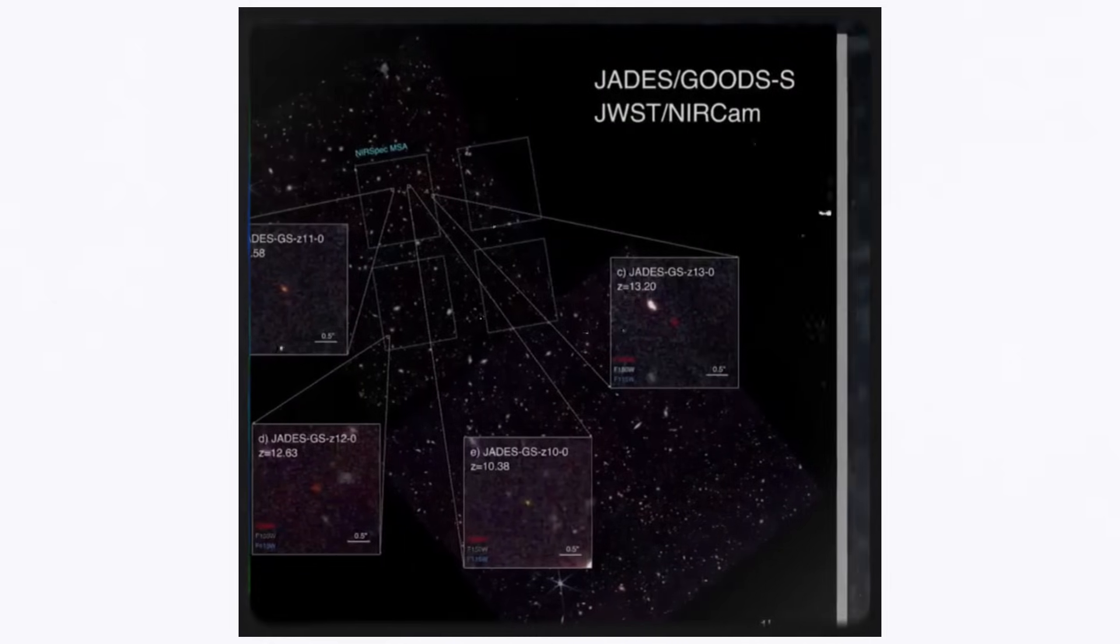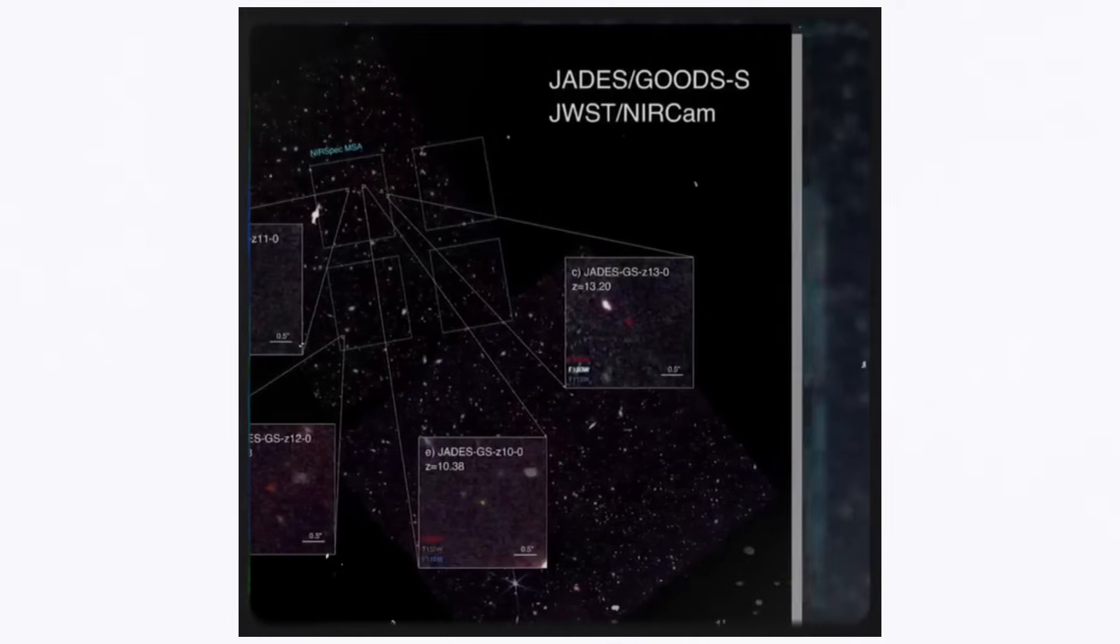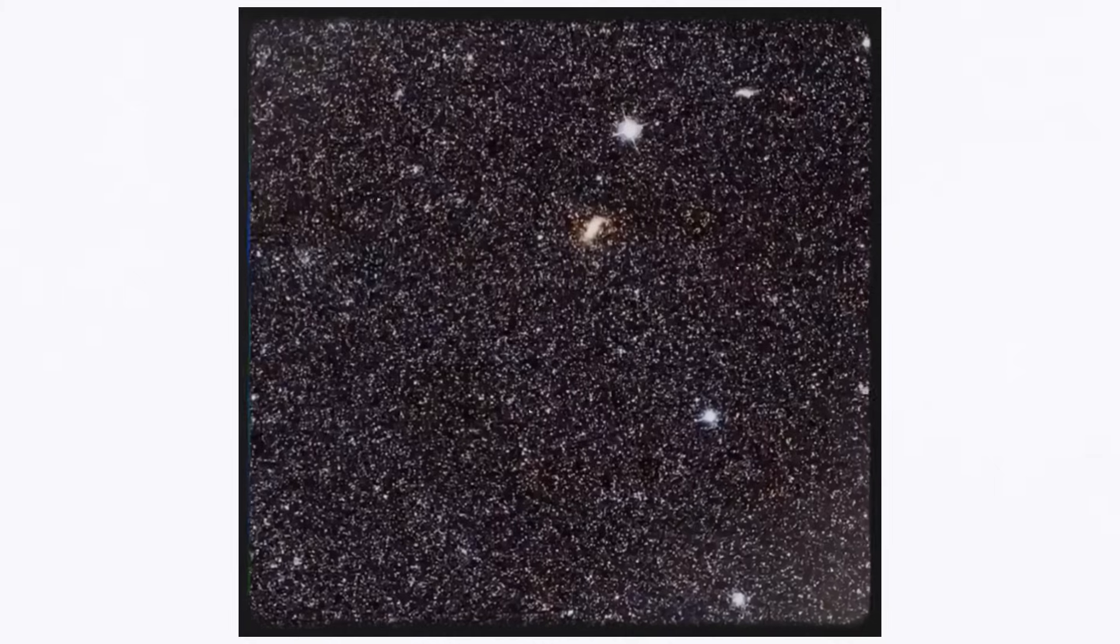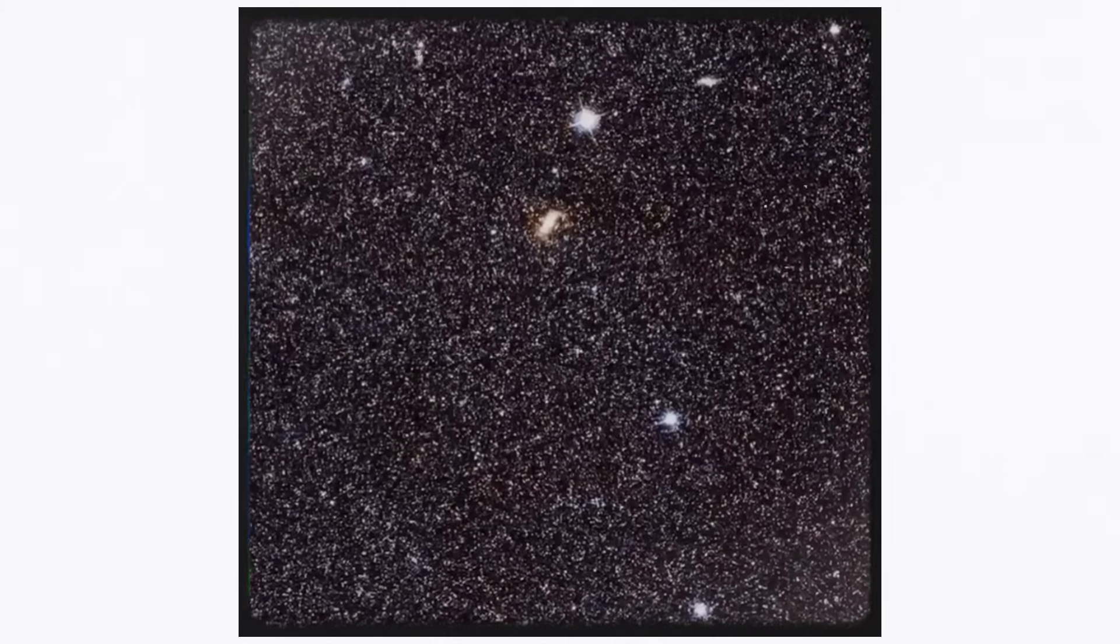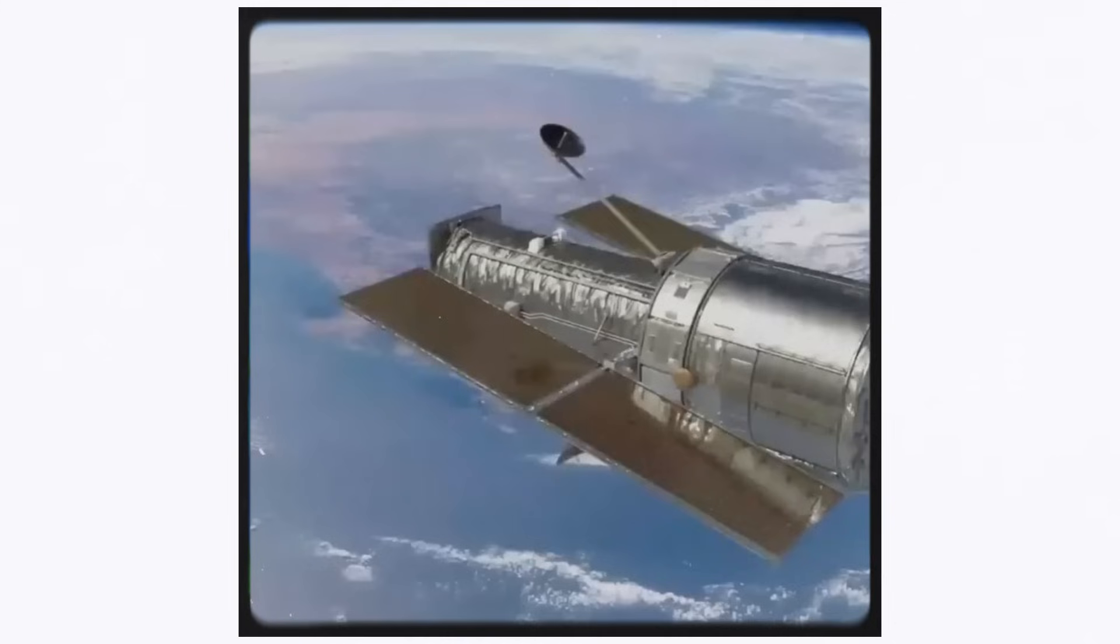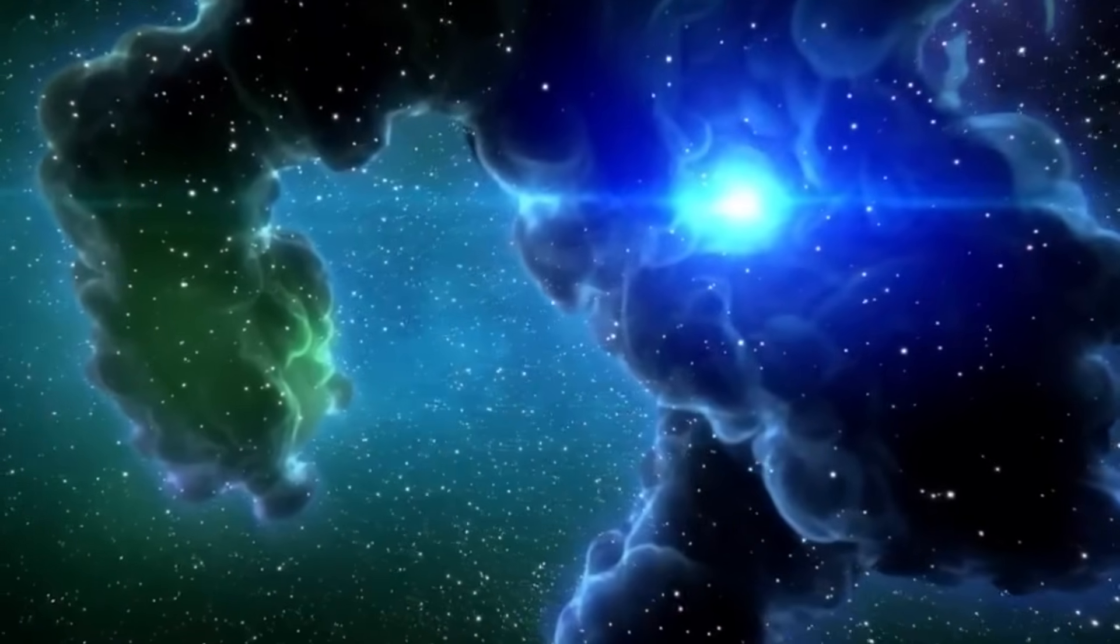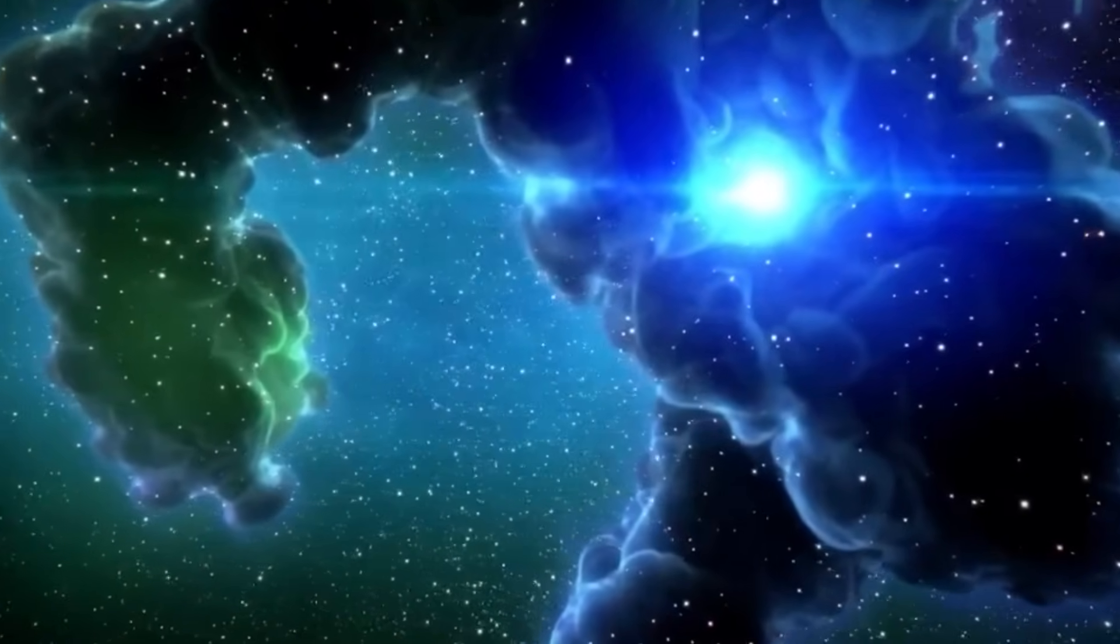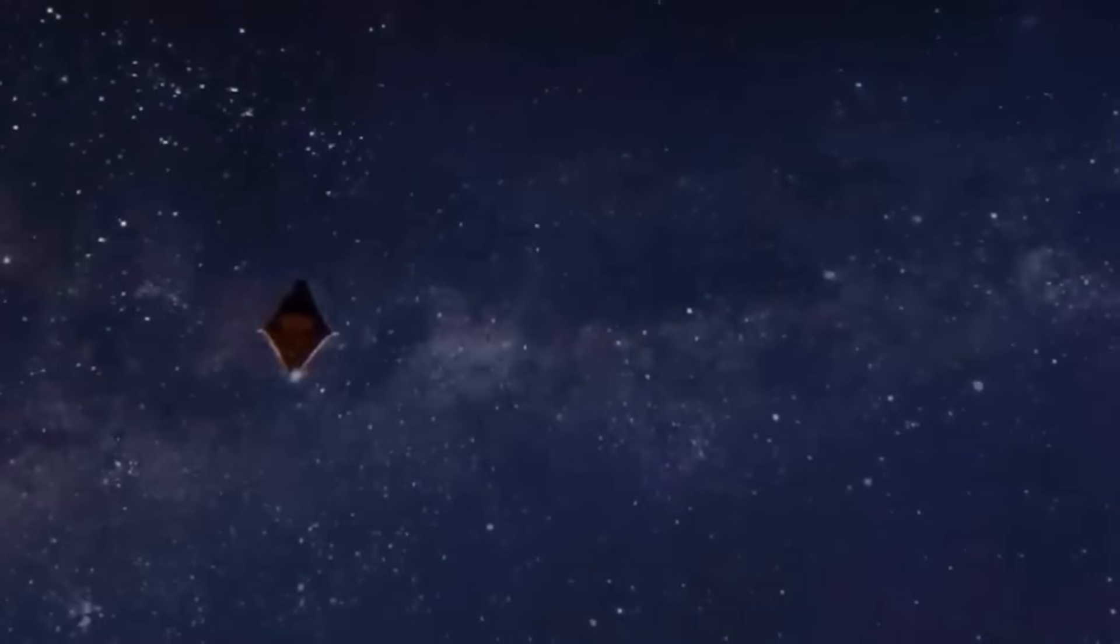In the constellation Virgo, the most extensively studied exoplanet outside our solar system orbits a star. This planet, named WASP-39b, resides a staggering 700 light-years away from Earth. It's a scorching gas giant comparable in size to Saturn, orbiting its host star at an astonishingly close distance, roughly eight times nearer than Mercury is to the Sun.